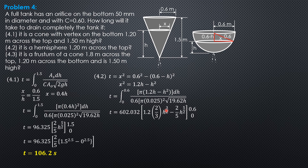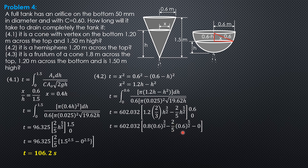Minus the second term: H² over √H is H^(3/2). The integral of H^(3/2) is H^(5/2) over (5/2), and the reciprocal of 5/2 is 2/5. So we have 2/5 × H^(5/2), evaluated from 0 to 0.6. Evaluating: 602.032 × [0.8 × 0.6^(3/2) − (2/5) × 0.6^(5/2) − 0]. Time equals 156.7 seconds.